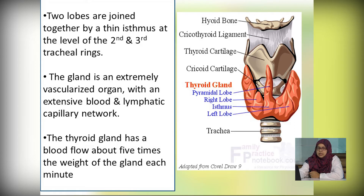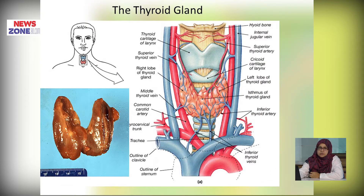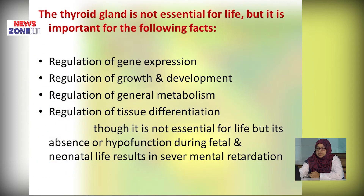The thyroid gland has more blood supply — about 5 times more than its weight each minute — showing its high vascularity. It receives its blood supply from the superior and inferior thyroid arteries. The thyroid gland is not essential for life but is important for regulation of gene expression, regulation of growth and development, regulation of general metabolism, and regulation of tissue differentiation.